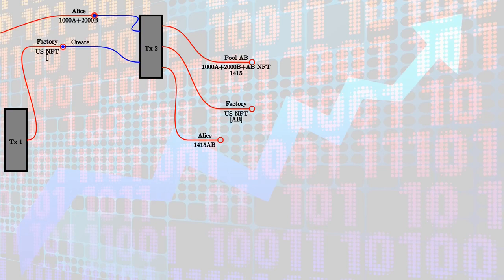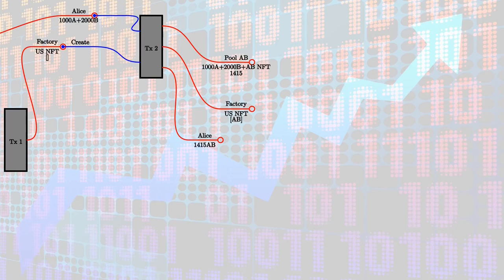The datum of the pool contains 1415, which is the amount of liquidity tokens Alice receives for setting up the pool. That number is the square root of the product of 1000 and 2000 — that's how the initial amount of liquidity tokens is calculated. The second output is the Uniswap factory again with its NFT and an updated datum: the list now contains an entry for the newly created AB pool. The third output goes to Alice: the freshly minted 1415 liquidity tokens for pool AB.